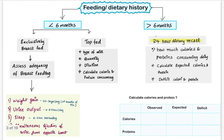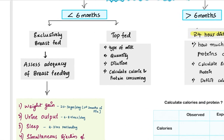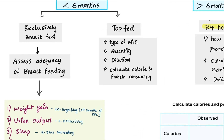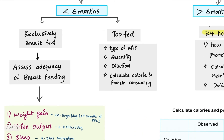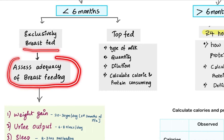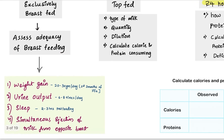So, the feeding or dietary history — we take feeding history in children less than 6 months old, and dietary history in children more than 6 months old. If the child is less than 6 months old, we have to ask 2 questions: if the child is on exclusively breastfed or on top-fed, meaning cow milk, buffalo milk, or any formula feed. If the infant is on exclusively breastfed, we have to assess the adequacy of breastfeeding by looking at 4 questions.